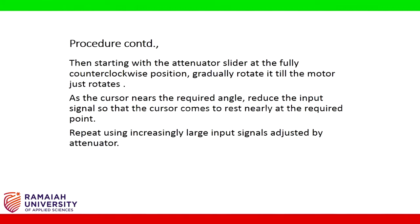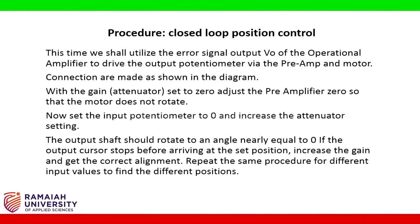Repeat using increasingly large input signal adjusted by the attenuator. The procedure of a simple closed loop position control experiment: we shall utilize the error signal output V0 of the operational amplifier to drive the output potentiometer via the preamp and motor. Connections are made as shown in the diagram. With the gain set to zero, adjust the preamplifier zero so that the motor does not rotate. Set the input potentiometer to zero and increase the attenuator setting; the output shaft should rotate to an angle nearly equal to zero. If the output cursor stops before arriving at the set position, increase the gain and get the correct alignment. Repeat the same procedure for different input values to find the different positions.